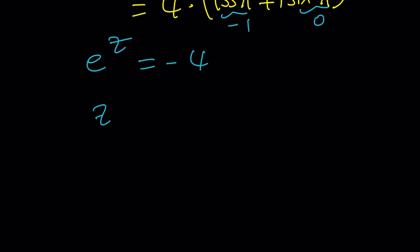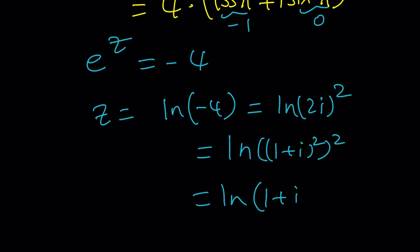It just means z is equal to ln of negative 4. Or, I know logs of negative numbers are not well-defined in the real world, but they're defined in the complex world. So we can go ahead and write this as ln 2i squared, which is nice, right? But remember, 2i is a special number because it's 1 plus i squared. So it's kind of like 1 plus i squared squared, which is 1 plus i to the 4th power.